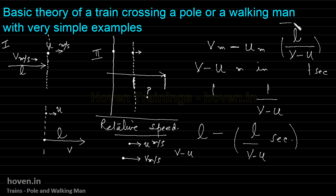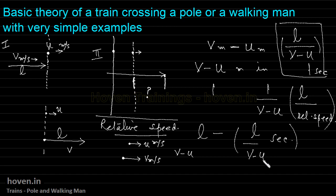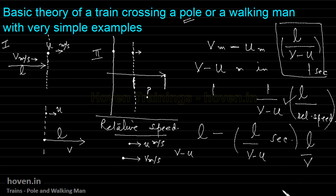So in this formula, we could equally write: time = L over relative speed. This is a more universal formula. The relative speed of the train with respect to a standing pole will be v only, because the pole is fixed to the earth. That is why for the pole case we derived the formula as L by v. So the general form is: the time taken by a train to move past an object is the length of the train divided by the relative speed of the train with respect to that object.